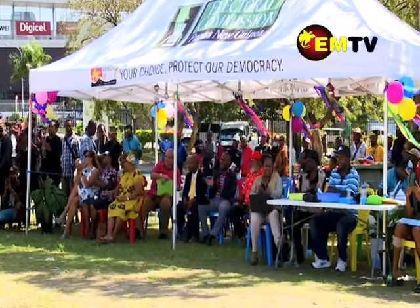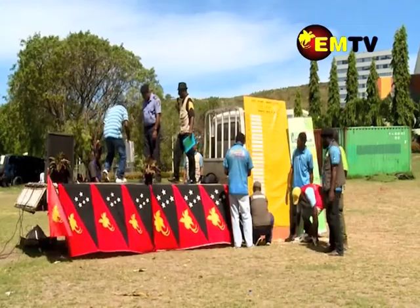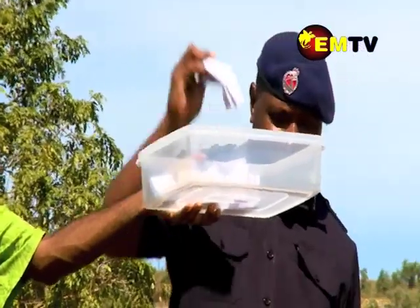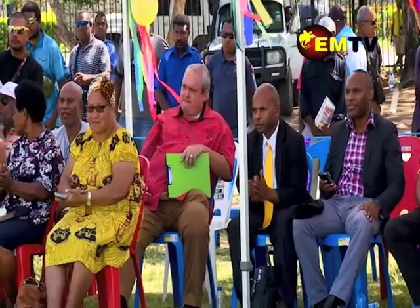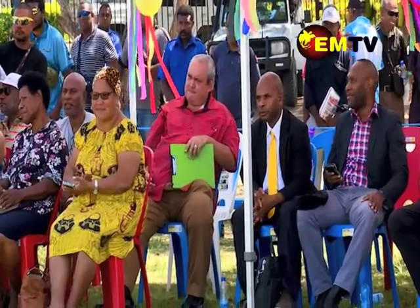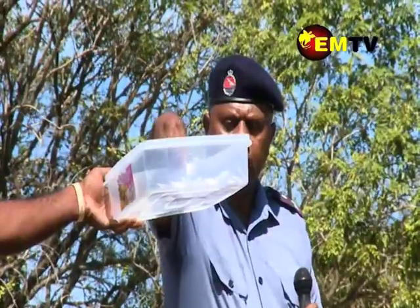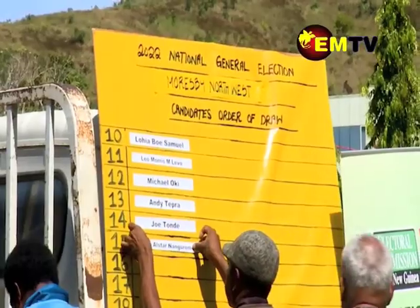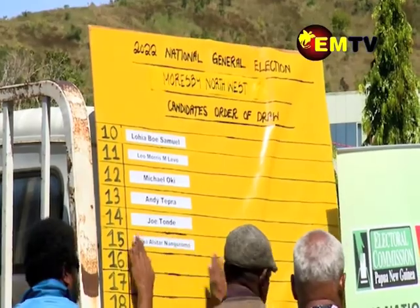The candidates and their supporters are present for the draw, with police doing the honours, drawing the names of candidates contesting the various seats in the city. The numbers picked from the draw will go on the candidate posters and be used as box numbers during voting.